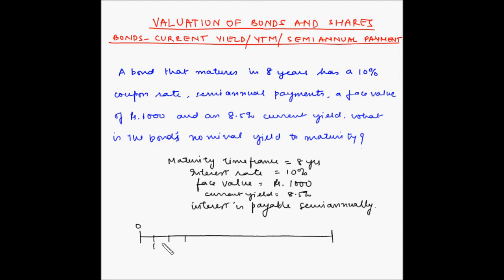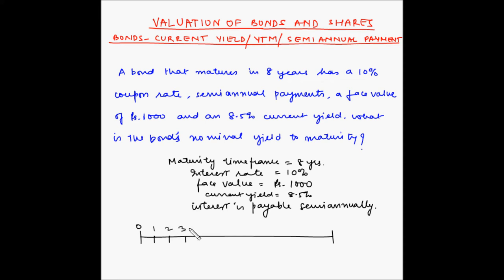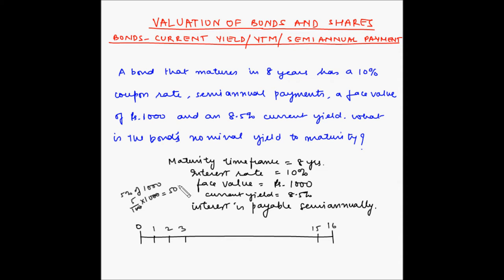The periods run one, two, three and so on up to fifteen and sixteen. Now, what is the interest rate per period? The interest rate annually is 10%, so per period it will be half, because each period is a half year. This gives us 5%. So 5% of the face value of rupees 1000 is: five divided by one hundred, multiplied by one thousand, which equals fifty rupees.